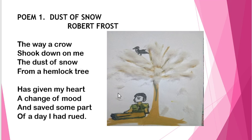In the first stanza he was feeling pessimistic — he was unhappy and hopeless — and that's why he sat under the Hemlock tree. But when the snow particles fell upon him, suddenly his mood changes into an optimistic one — hopeful, with a positive attitude. And because of the change of mood, he says 'a change of mood saved some part of the day I had rued.' He himself feels he has destroyed some part of the day because he was feeling unhappy and lost in depressive thoughts.